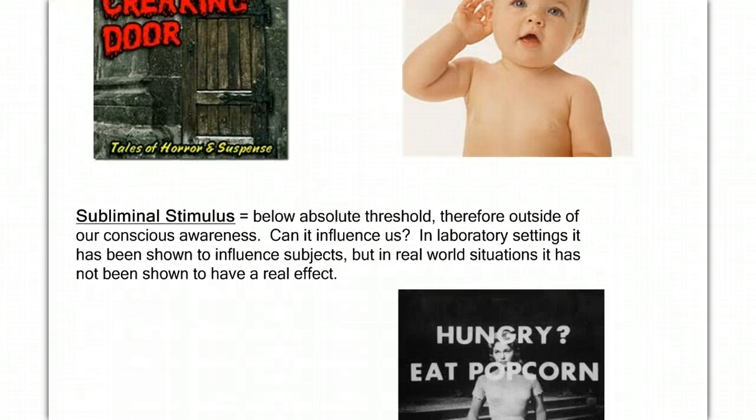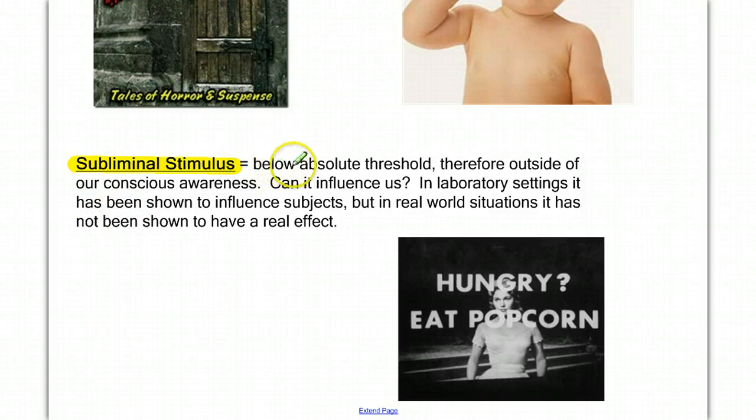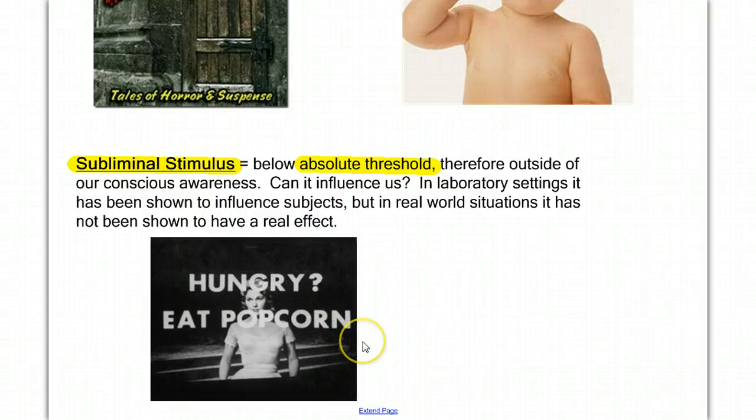Another concept that our book talks about in this chapter is subliminal stimulus. By definition, subliminal stimulus is that stimulus that's below our absolute threshold, therefore outside of our conscious awareness. And the question is, can it influence us? And there's lots of controversy around this idea in trying to answer this question. There is research done that under very specific laboratory settings, it seems like these subliminal messages, ones that we don't know that we've seen or heard, can affect our decision making.